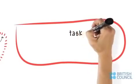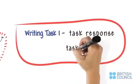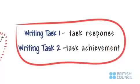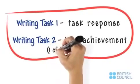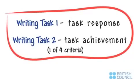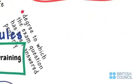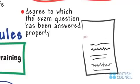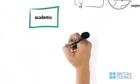We look at the criteria of task response for writing task 1 and task achievement for writing task 2. These represent one of four criteria on which you will be tested. Look for the other three criteria in other videos. These criteria focus on the degree to which the exam question has been answered properly.